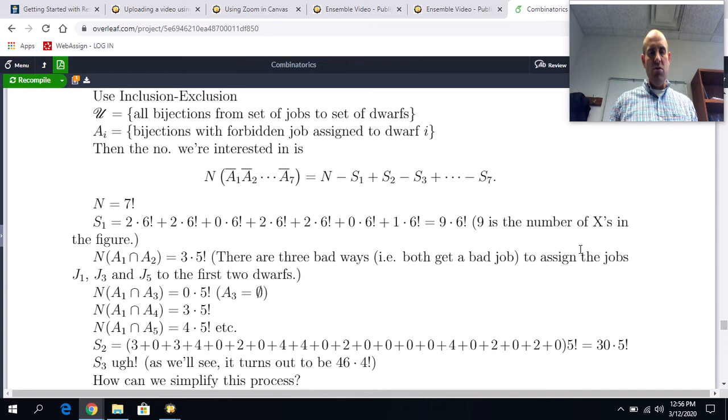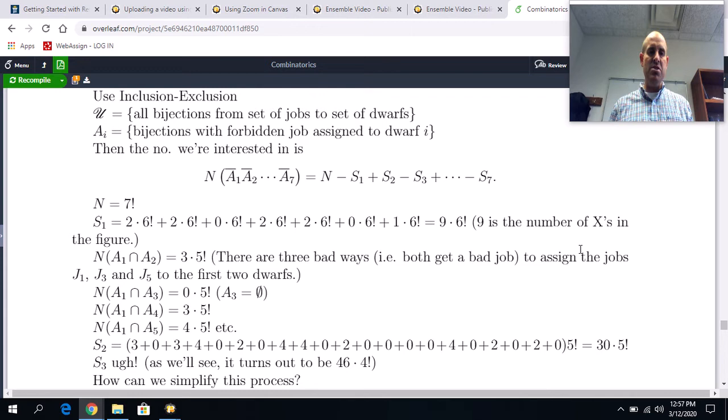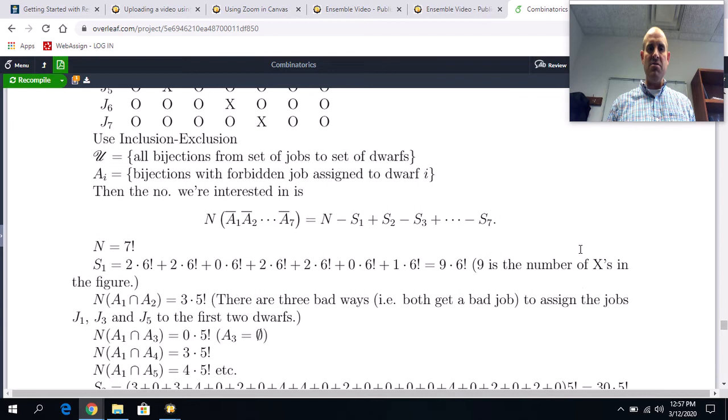Because what we're basically doing is we're saying, well, you know, someone has to have a bad job. So you pick one of those X's as kind of the bad job assignment to a given dwarf. And then everybody else, you just freely assign. Now when we go to do S_2, the issue is we are intersecting two sets at a time. So for instance, with A_1 and A_2, that means that we have two dwarfs that get bad jobs simultaneously.